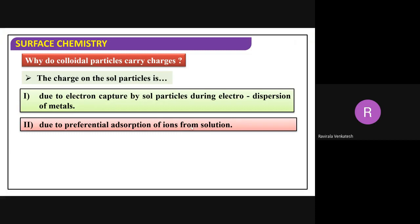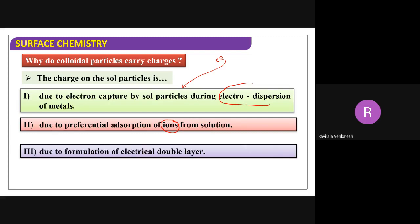In electro-dispersion, there is a chance that electrons will be captured on the sol particles. Because of that, they may get charge due to preferential adsorption of ions. For example, if a positive ion is adsorbed on the sol, it will get a positive charge; if a negative ion is adsorbed, you get a negative charge. This is how charge forms on sol particles.